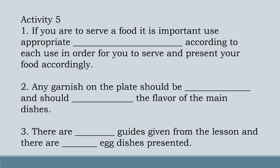Activity 5 — If you are to serve a food, it is important to use appropriate tableware according to its use in order for you to serve and present your food accordingly. Number 2: any garnish on the plate would be edible and should complement the flavor of the main dishes. Number 3: there are 8 guides given from the lesson and there are different egg dishes presented.